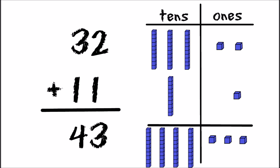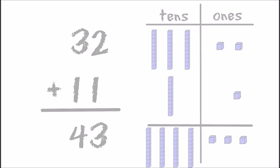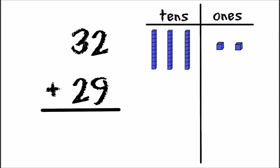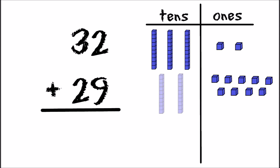That means that 32 plus eleven is forty-three. That was easy! But what happens if we want to add 29 instead of 11? 29 is the same as nine one-unit blocks and two ten-block stacks.